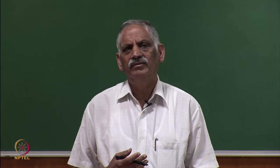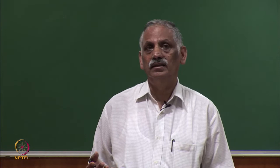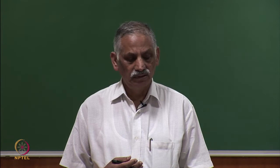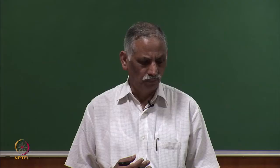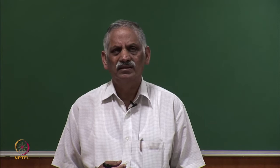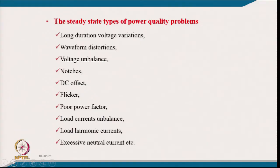Voltage imbalance causes increased heating and losses in induction motors and other loads. Notches in voltage, DC offset — where some load draws a small DC current causing issues in transformers, AC equipment, and inductors — and flicker are other steady-state problems. Flicker from welding and similar loads causes irritation. Poor power factor and load current unbalance cause unbalanced voltage at the point of common coupling.